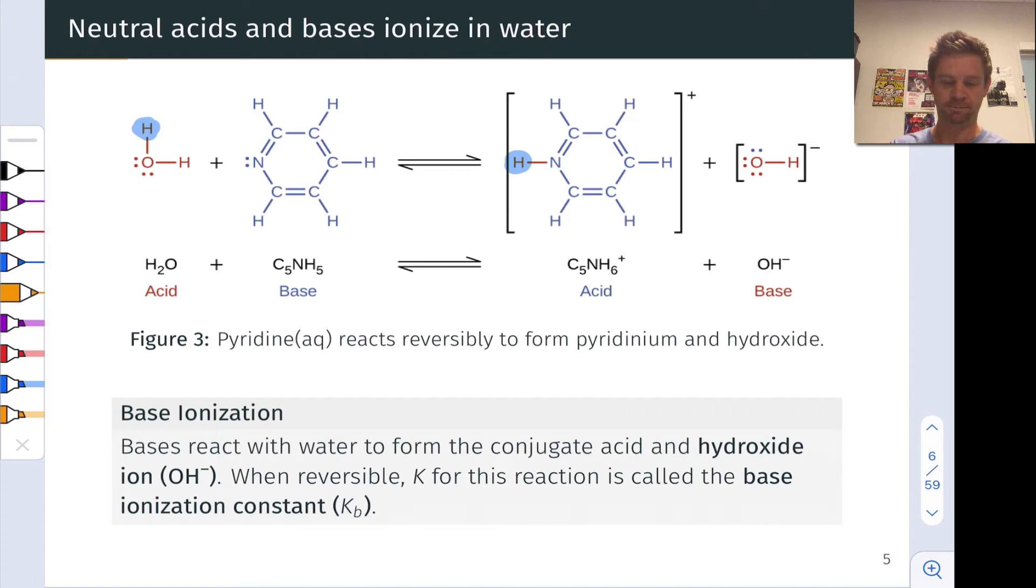So let's highlight the conjugate pairs again. Here we have pyridine is the base, and its conjugate acid is known as pyridinium. This is one of the conjugate pairs. And we have water, and we have the conjugate base of water, which is OH-, or the hydroxide anion. So two conjugate pairs, just as we'd expect.